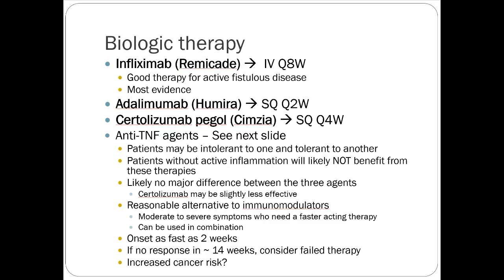Biologics — infliximab or Remicade was the first drug developed for this. It's the IV one, given every eight weeks at an infusion center. It has the most evidence and has been around the longest for Crohn's. It's a TNF-alpha inhibitor. Notably, Enbrel has not been studied in Crohn's disease and is not used. The main options are IV infliximab or subcutaneous adalimumab (Humira), a SQ shot every two weeks.